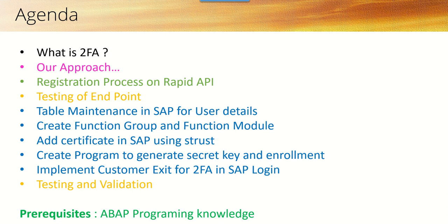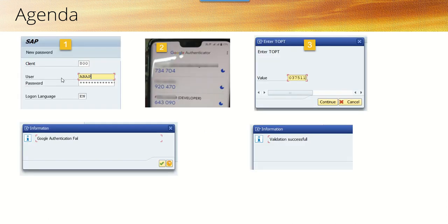Once we are done with this implementation, the changes on our login screen will be like this: initially on the first screen, we need to enter our user ID and password. If our initial user ID and password is okay, then in the next step, we need to check the six-digit pin on our mobile application, and that six-digit pin, based on our respective secret key, we need to enter in the next screen as the TOTP.